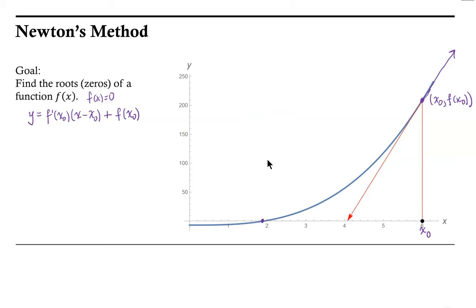We want to know where this tangent line crosses the x-axis. Rather than go right to finding the zero of the original function, we're going to find the zeros of these tangent lines. The zeros of these tangent lines are going to approximate and get closer and closer to the zero of the actual function. So we set y equal to zero: zero equals f prime at x naught times (x minus x naught) plus f of x naught.